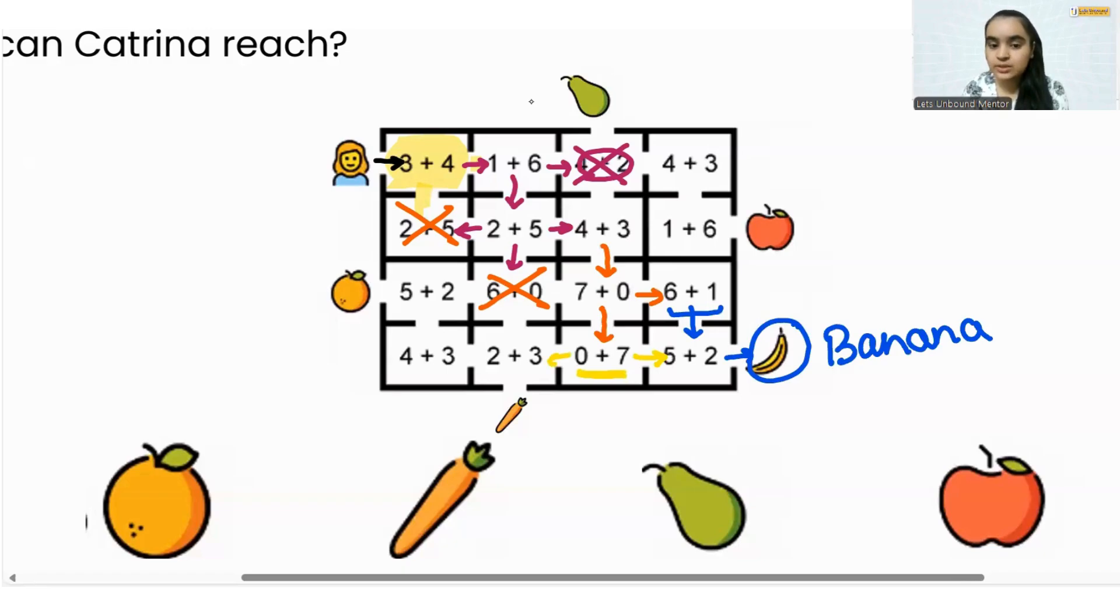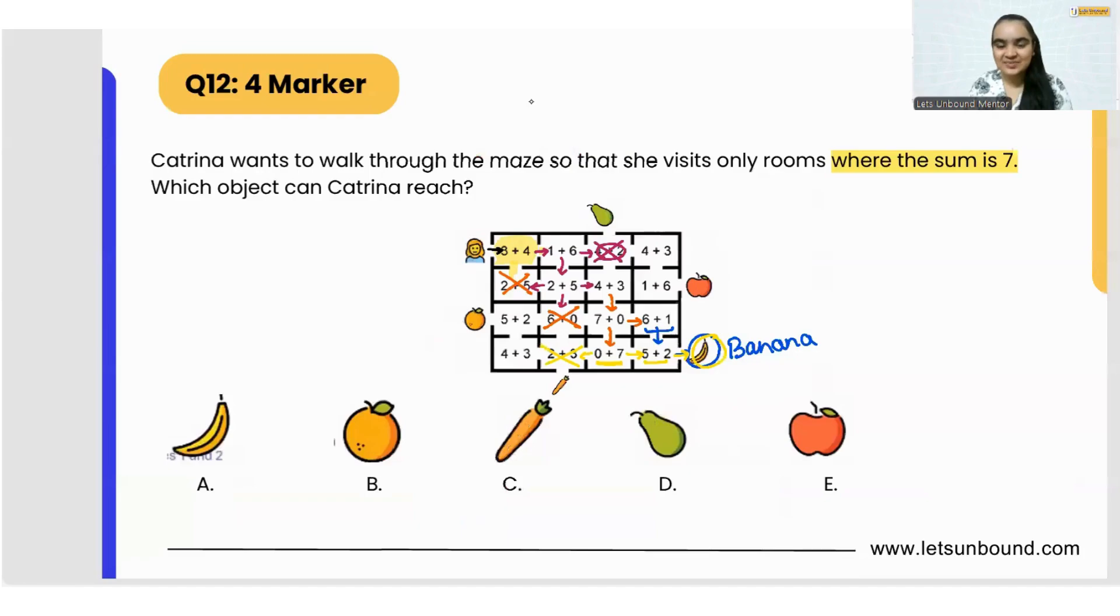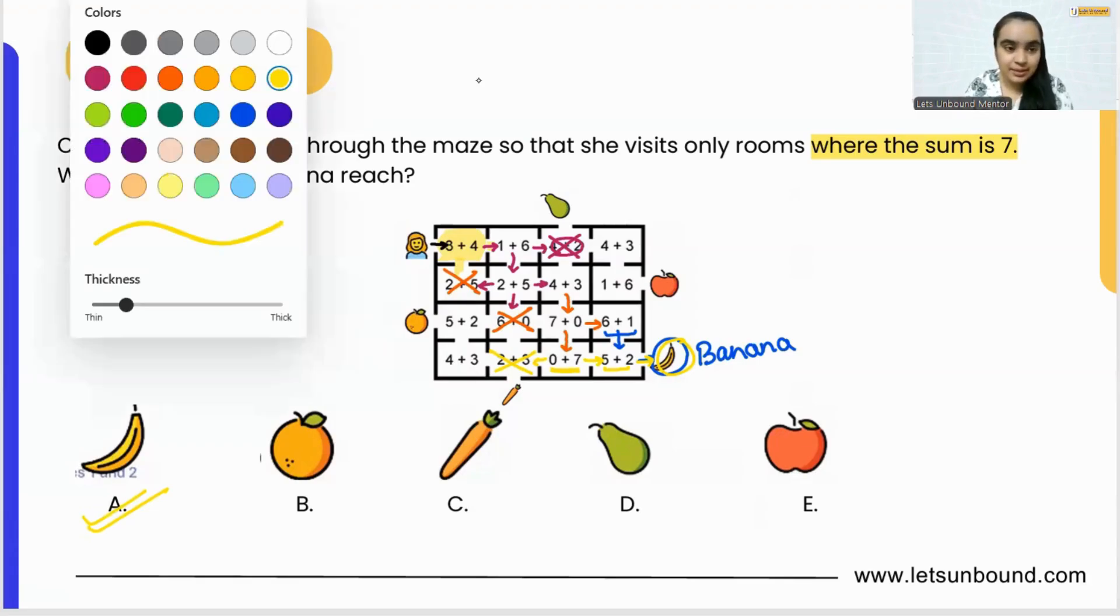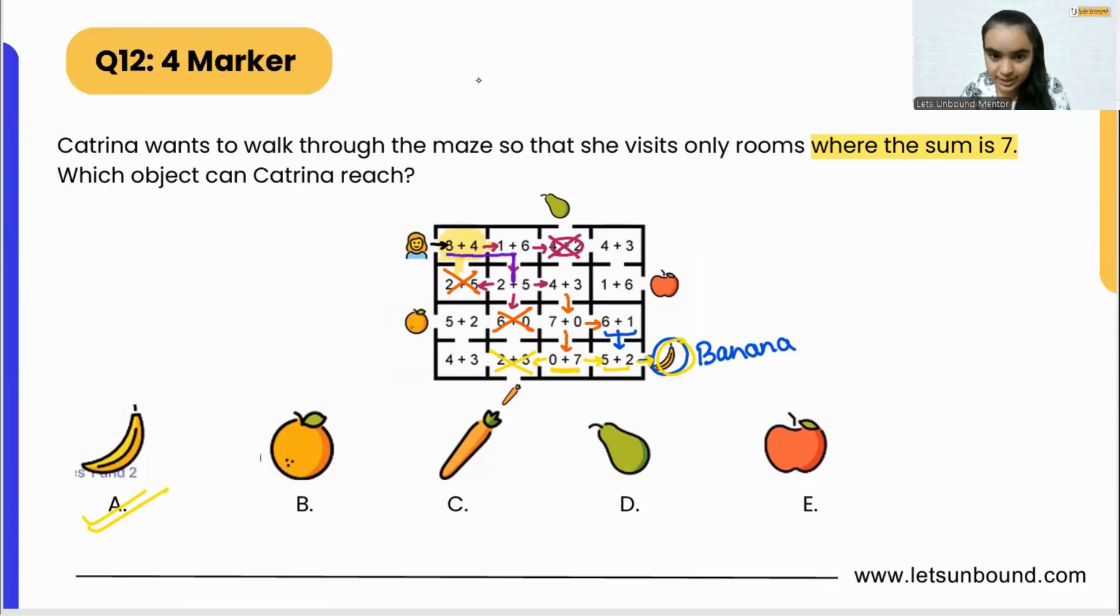And what if we will go down? 0 plus 7 is 7, and then we have to go over here, right? We cannot go back because 2 plus 3 is 5, not 7. So again, 5 plus 2 is 7, and we are reaching banana again. So again, banana is the winner. So we got an answer that option A is correct: banana.